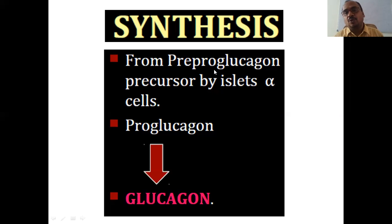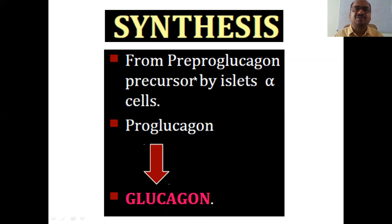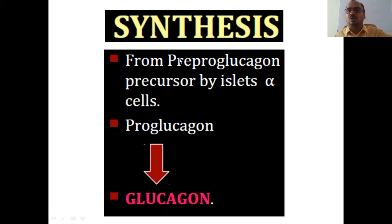The precursor of glucagon is called pre-pro-glucagon. This has appeared in competitive examinations many times. The pre-pro-glucagon is secreted by alpha cells; it is converted into pro-glucagon by removal of the 'pre' sequence. Then the 'pro' sequence is removed, and you get glucagon. So: pre-pro-glucagon → pro-glucagon → glucagon.